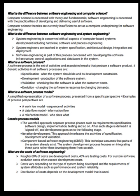Now let us see what is the software process model — a simplified representation of a software process presented from a specific perspective. Four examples of software process perspectives are: a workflow model showing sequence of activities, a data flow model showing information flow, and a role or action model showing who does what.